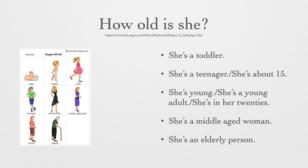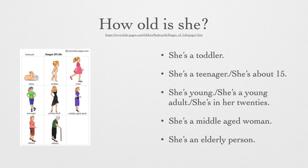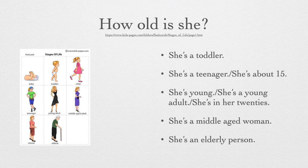She's a middle-aged woman — ela é uma mulher de meia-idade, ali por uns 45 a uns 60 e pouquinhos. She's an elderly person — she's an elderly woman, he's an elderly man. Então, ela é uma pessoa idosa. Retired é mais pra aposentado. So, we have baby, toddler, child, teenager, young adult, middle-aged, adult, retired, and elderly.